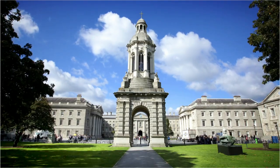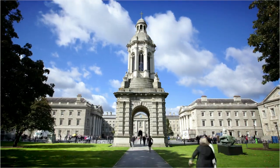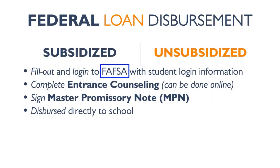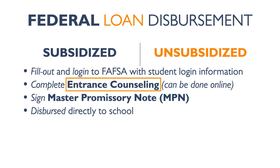How are loans disbursed to the school? First, you need to complete the FAFSA to determine if you qualify for federal student loans. Then you have to accept them with the student login, as these loans will be in the student's name, not the parent's. Next, you will need to complete entrance counseling, which basically ensures that you fully comprehend the terms and conditions of your loan.